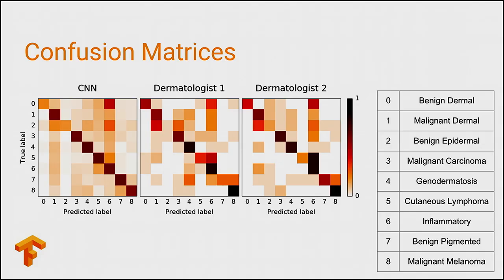Here are some confusion matrices on a nine-way classification task. One thing to notice is that we often mispredict the inflammatory category, as it's such a broad category. Another thing is that dermatologists will err on the side of guessing a benign lesion is malignant rather than that a malignant lesion is benign, because that would be a deadly mistake — and you can see that from this box.